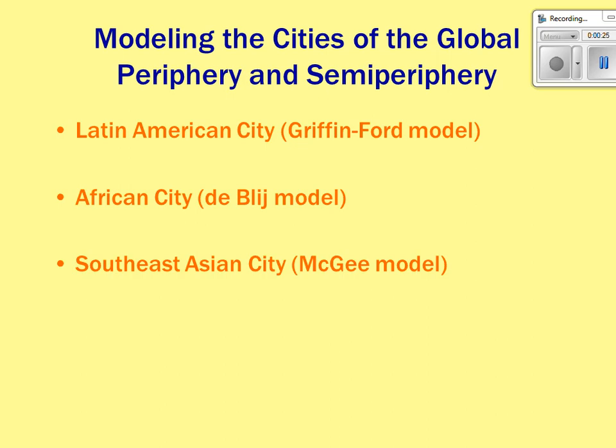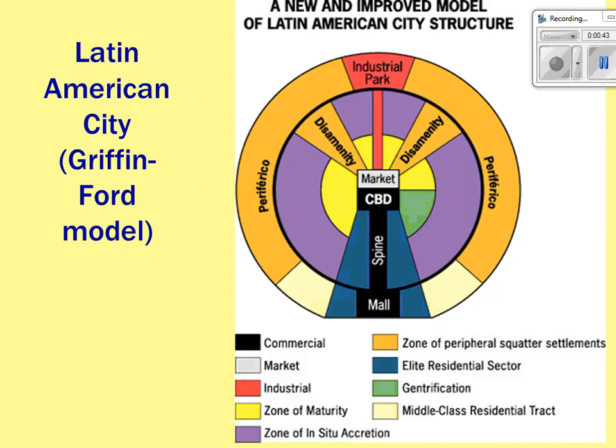The three most common city models for those areas are the Latin American or Griffin-Ford model, developed by Griffin and Ford; the sub-Saharan African city model, created by the authors of your textbook; and the Southeast Asian model, also known as the McGee model.